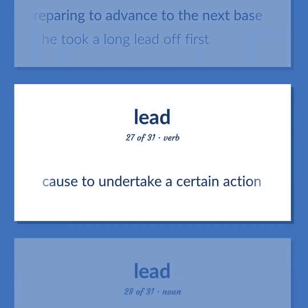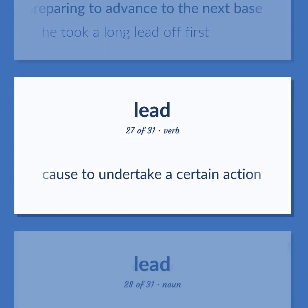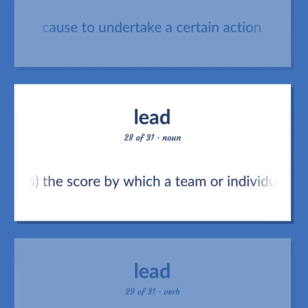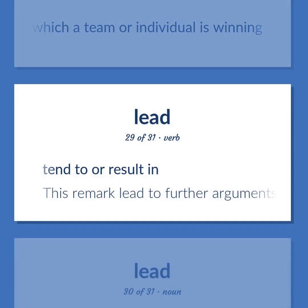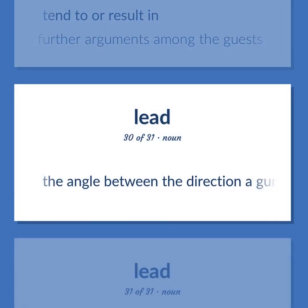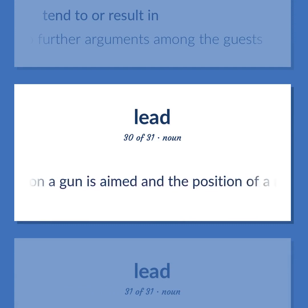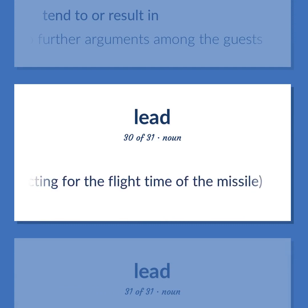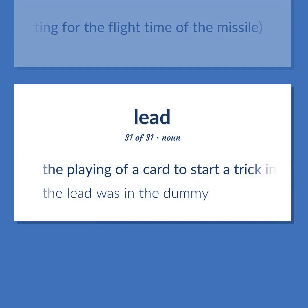Lead: A position of being the initiator of something and an example that others will follow, especially in the phrase 'take the lead' — he takes the lead in any group. Baseball — the position taken by a base runner preparing to advance to the next base — he took a long lead off first. Cause to undertake a certain action. Sports — the score by which a team or individual is winning. Result in — this remark led to further arguments among the guests. The angle between the direction a gun is aimed and the position of a moving target, correcting for the flight time of the missile. The playing of a card to start a trick in bridge — the lead was in the dummy.